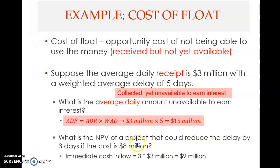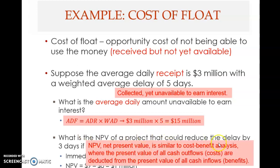You save nine million and your cost is only eight million, so you actually save one million. The net present value is nine million minus eight million, giving an NPV of one million. NPV is similar to cost-benefit analysis: present value of benefits minus present value of costs. Since NPV is positive, you should accept the project. If NPV were negative, costs exceed benefits and you should reject.